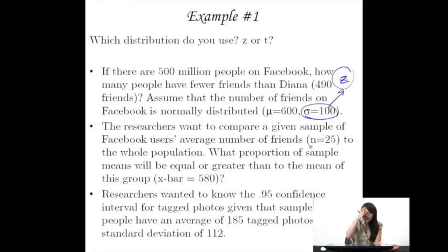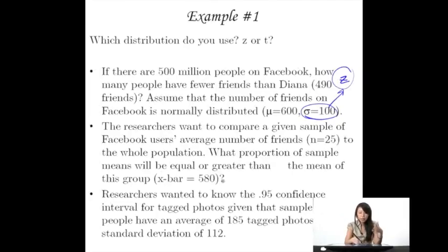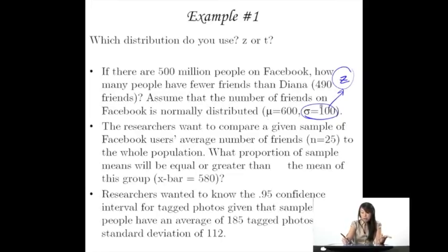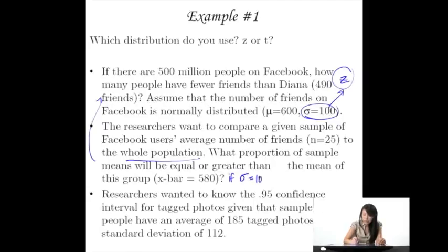Here, researchers want to compare a given sample of Facebook users' average number of friends — sample size 25 — to the entire population. What proportion of sample means will be equal to or greater than the mean of this group? N equals 25, mean equals 580. Here I wouldn't necessarily use z, but I also don't have the standard deviation. Maybe this is connected to the previous problem — if sigma equals 100 from that population, then I'll use z.